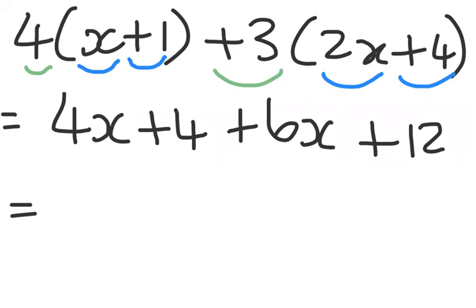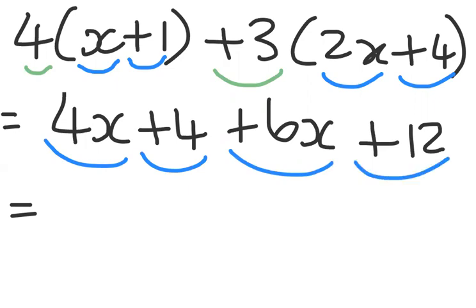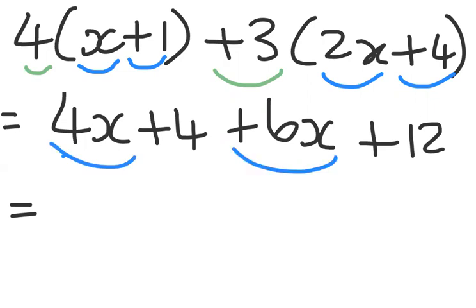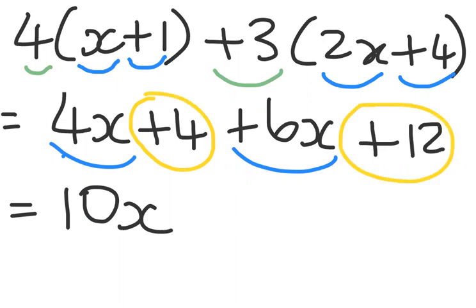Now we collect like terms. We have four terms: 4x, plus 4, plus 6x, and plus 12. Adding the like terms: 4x plus 6x gives 10x. Then adding the numbers: 4 plus 12 gives plus 16. So the final answer is 10x + 16. That was simplification — thank you.